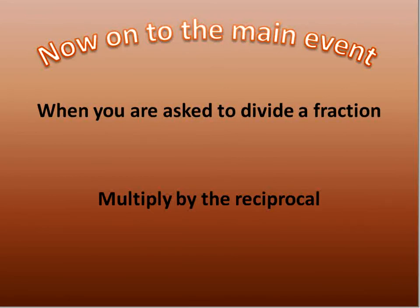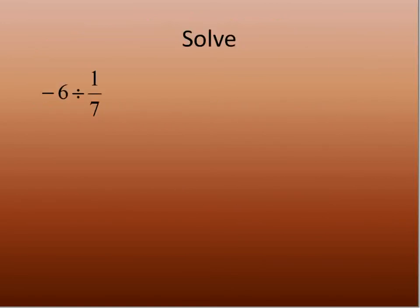When you're asked to divide a fraction, you multiply by the reciprocal. Here's an example: negative 6 divided by 1 over 7. We're going to write negative 6 as a fraction, negative 6 over 1, divided by 1 over 7.